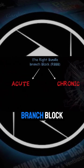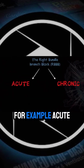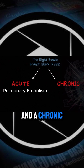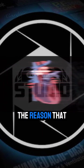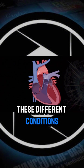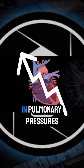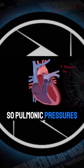What I want you to remember is a right bundle branch block — is this an acute process or is this a chronic process that's been going on? For example, an acute process being a pulmonary embolism and a chronic process being something like COPD. The reason we get a right bundle branch block in both of these conditions is because there is a very high increase in pulmonary pressures.